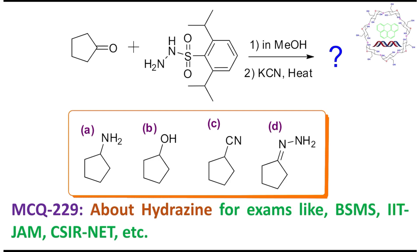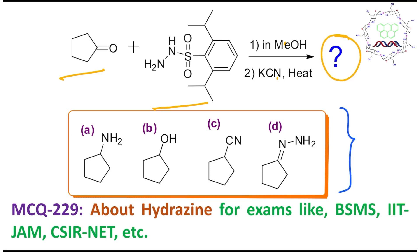You can see the problem: the reaction of cyclopentanol with this hydrazine in the presence of methanol and KCN. What is the product, or what is the major product of this reaction? Four options are provided and one of them is the right answer.